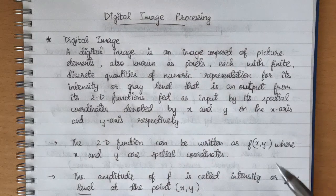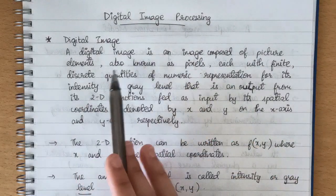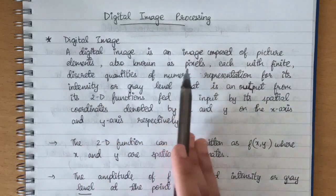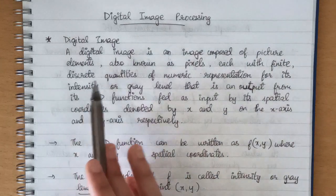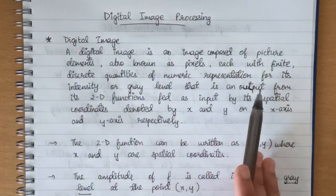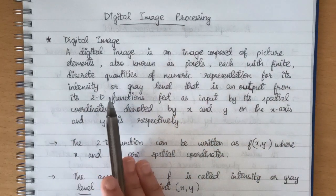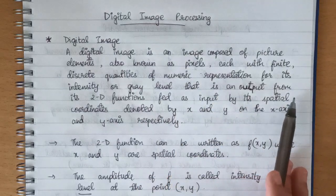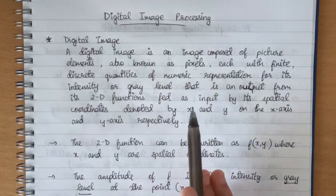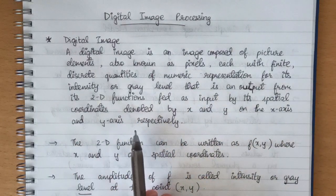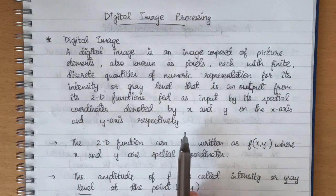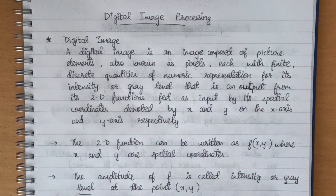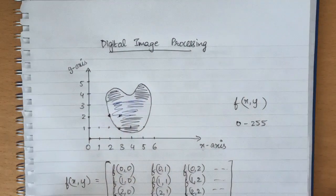Let's move on to the definitions. What is a digital image? A digital image is an image composed of picture elements, also known as pixels, each with finite discrete quantities of numeric representation for its intensity or gray level that is an output from its 2D functions fed as input by its spatial coordinates denoted by x and y on the x-axis and y-axis respectively.